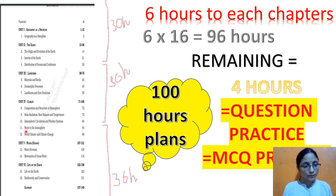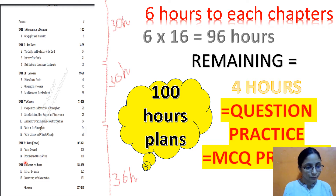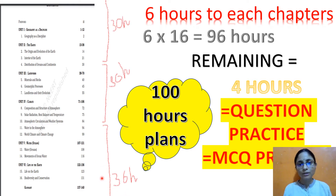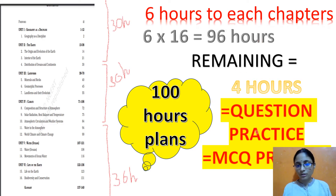The third part covers chapters 11 to 16: water in the atmosphere, chapter 12 is climate and climate change, chapter 13 is water and oceans, chapter 14 is the movement of oceanic water, and then life on the earth and biodiversity and conservation. I will cover this third part in 36 hours. I have divided 6 hours to each chapter, making 96 hours total, with the remaining 4 hours for question and MCQ practices.